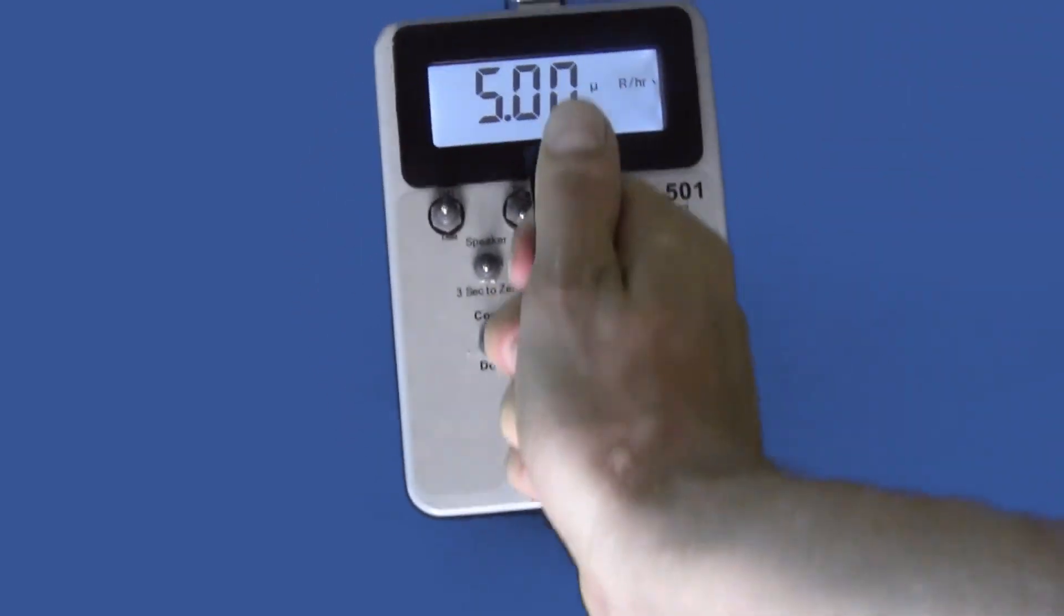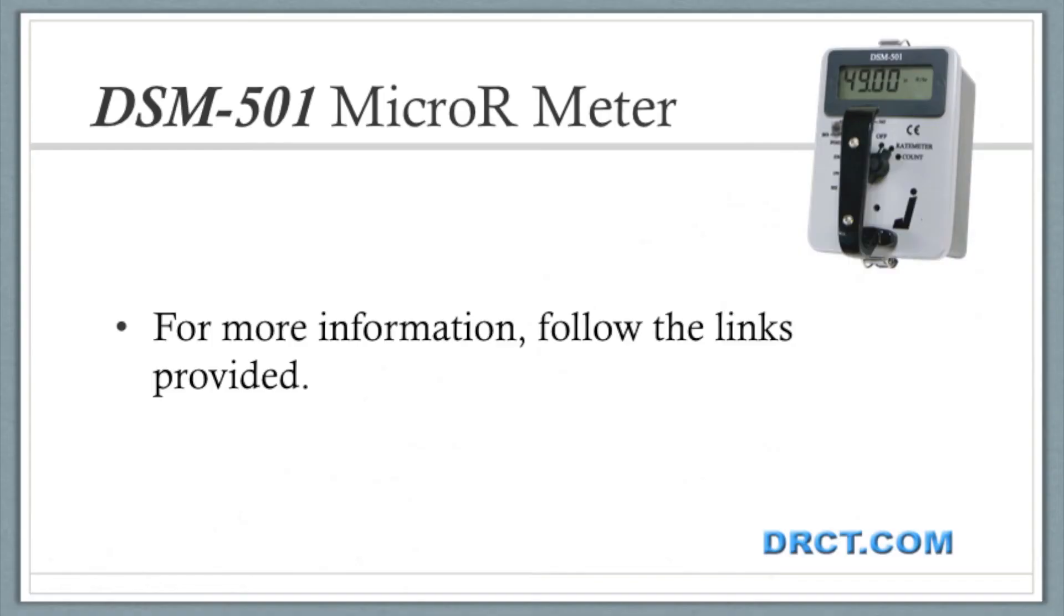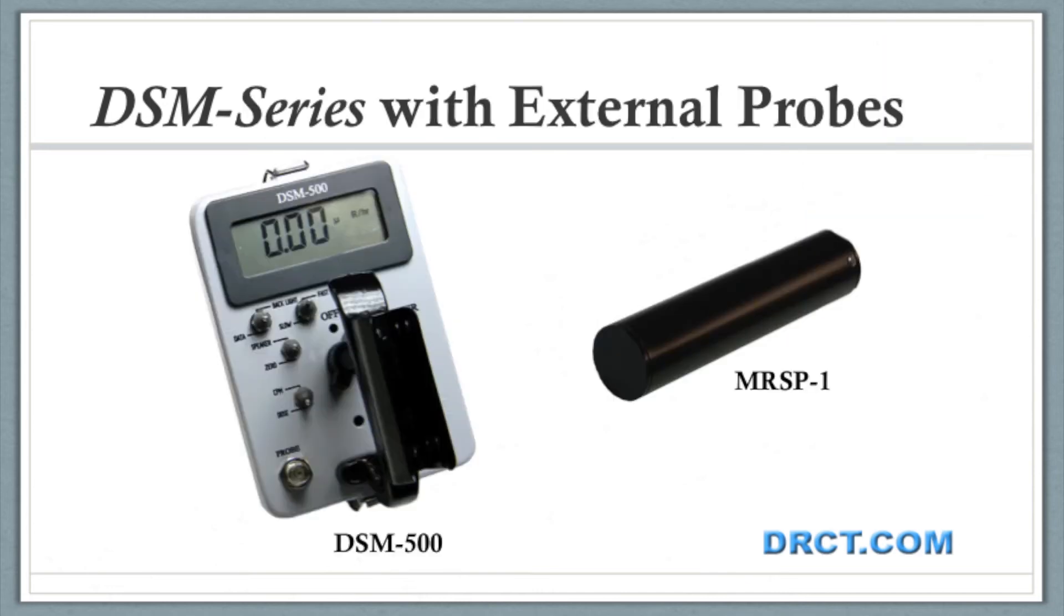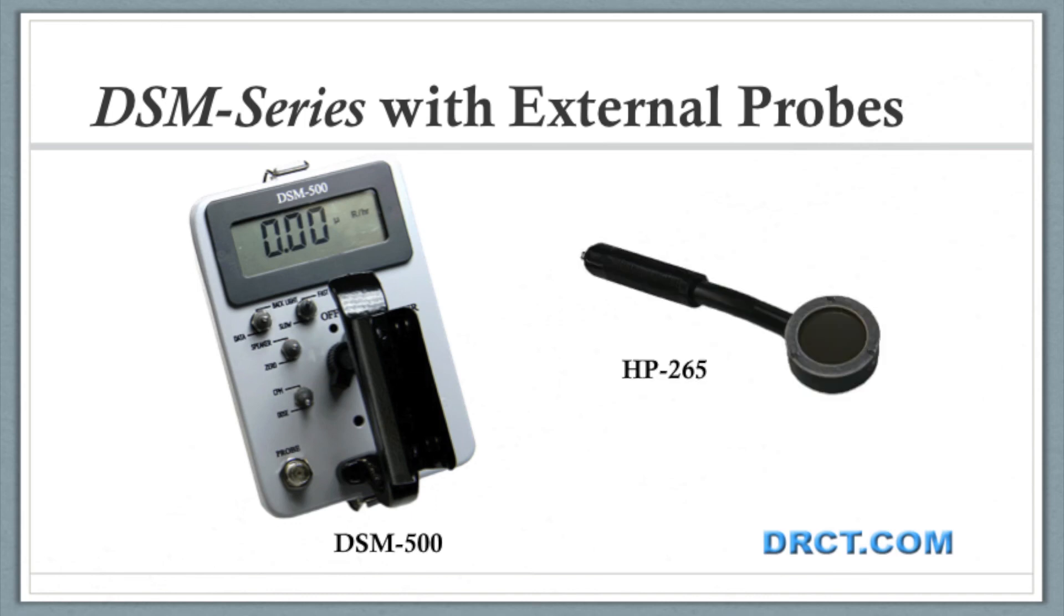That concludes our demonstration for today. For specifications and ordering information, follow the links provided. For an external probe version of this survey meter, we offer the DSM-500 with an external plastic scintillation probe, the MRSP-1, a sodium iodide probe model GSP-1, and other probes are available. Other links are provided for those options. Thanks for watching and have a great day.